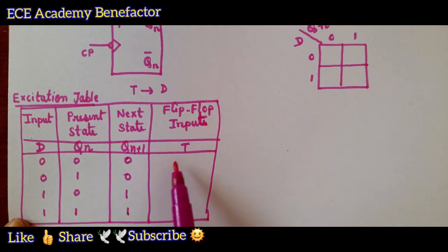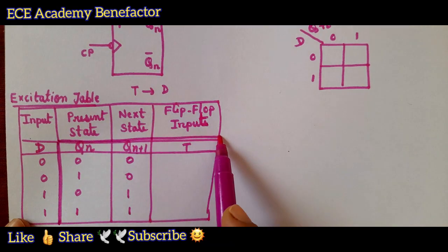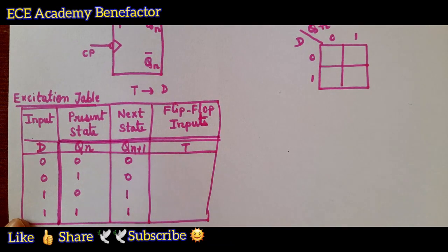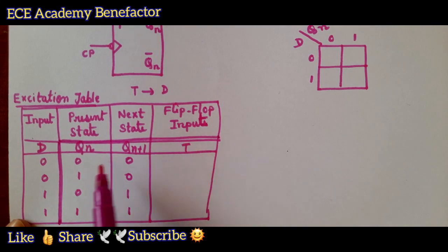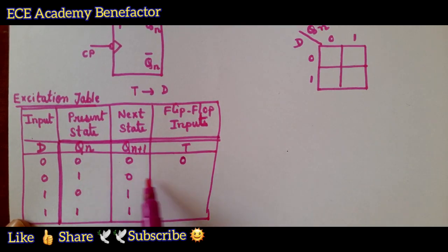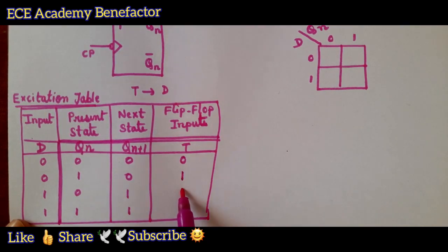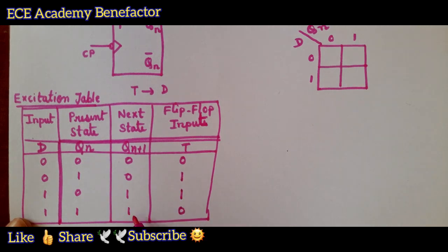Now we need to write the excitation table for the T flip-flop. This requires three columns: Q_n, Q_n+1, and T. T stands for toggle. For 0→0, no change, so T = 0. For 0→1, there is a change, so T = 1. For 1→0, there is a change of state, so T = 1. For 1→1, no change, so T = 0. Whenever there is a change, T becomes 1. We have written the truth table of the D flip-flop and then the excitation table for the T flip-flop.